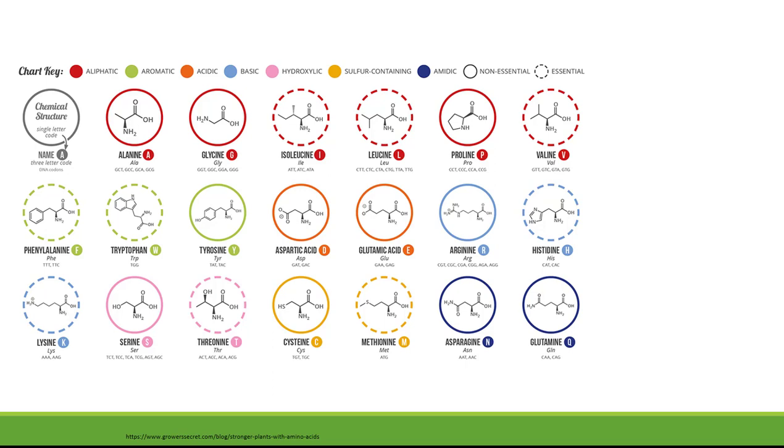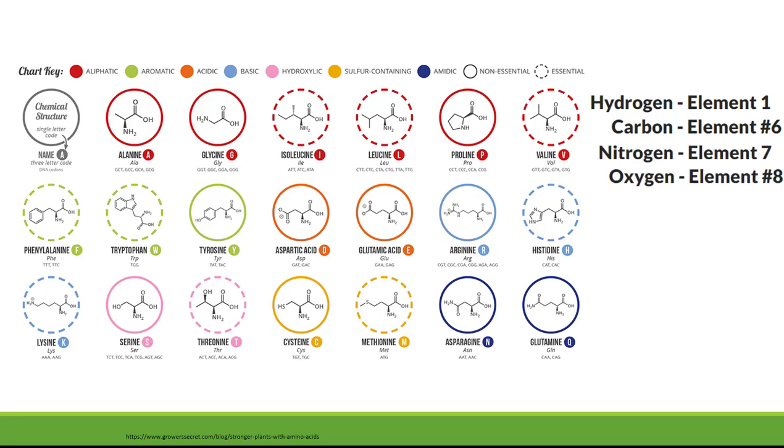Now if we look closely at the structure of each amino acid, we can find out they are made up of elements like hydrogen, carbon, nitrogen, oxygen, and sometimes sulfur.